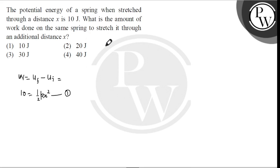Now what is the amount of work done on the same spring to stretch it through an additional distance x? If additional distance is x, then the initial distance was x, so the new total becomes 2x. Work done W' is...